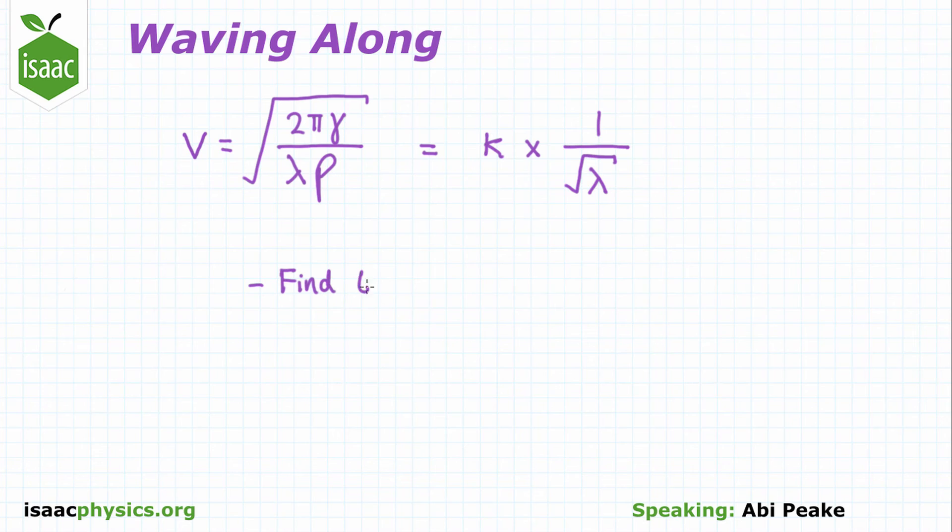Using the wave speed at a particular wavelength, as given in the question, you can calculate k. You should now be able to find the wave speed at any given wavelength.